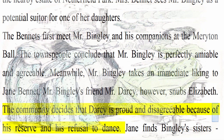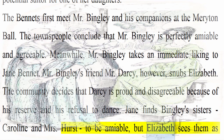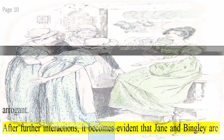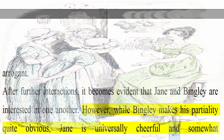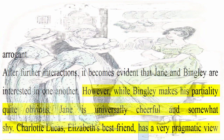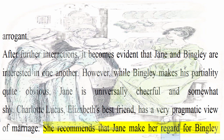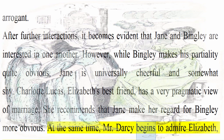Jane finds Bingley's sisters, Caroline and Mrs. Hurst, to be amiable, but Elizabeth sees them as arrogant. After further interactions, it becomes evident that Jane and Bingley are interested in one another. However, while Bingley makes his partiality quite obvious, Jane is universally cheerful and somewhat shy. Charlotte Lucas, Elizabeth's best friend, has a very pragmatic view of marriage and recommends that Jane make her regard for Bingley more obvious. At the same time, Mr. Darcy begins to admire Elizabeth, captivated by her fine eyes and lively wit.